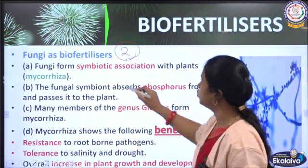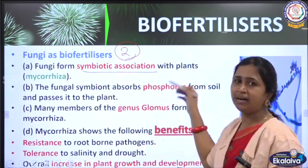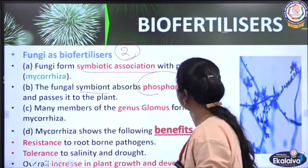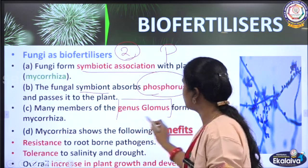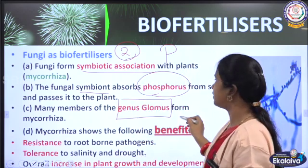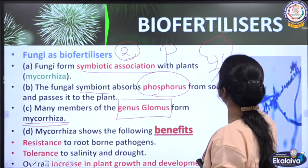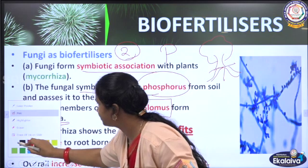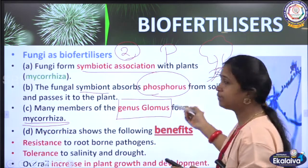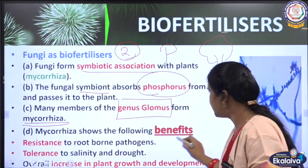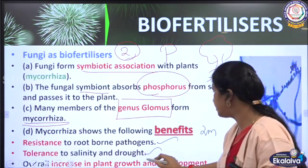Fungi as bio-fertilizers involve the association called mycorrhiza — a symbiotic association between a plant and a fungus. The fungal symbiont absorbs phosphorus from the soil. The fungus forming mycorrhiza belongs to the genus Glomus. You can see thread-like structures on the tree roots representing this association. Mycorrhiza provides several benefits: resistance to root-borne pathogens, tolerance to salinity, and increased plant growth and development.